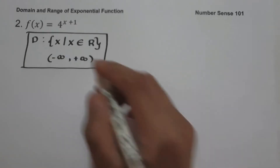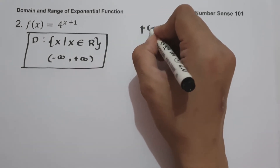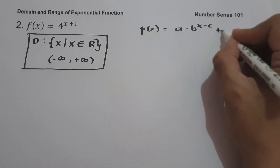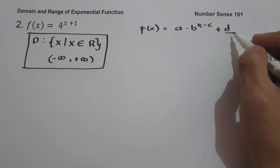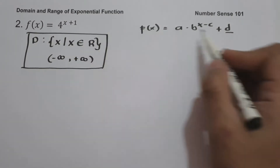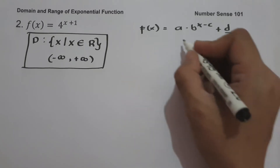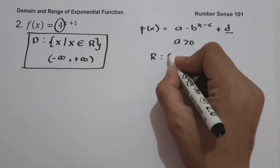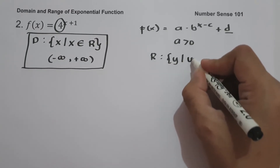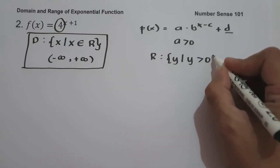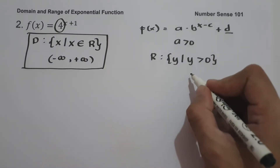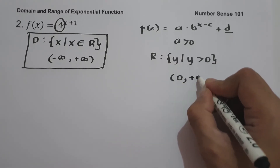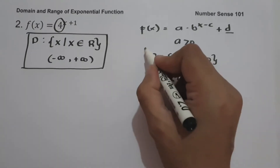To find the range, since the function is written in the form f(x) = a times b raised to x minus c plus d, and since we don't have a value for d, our horizontal asymptote is 0, and the value of a is greater than 0. Therefore, our range is the set of y values such that y is greater than 0, or in interval notation, from 0 up to positive infinity.